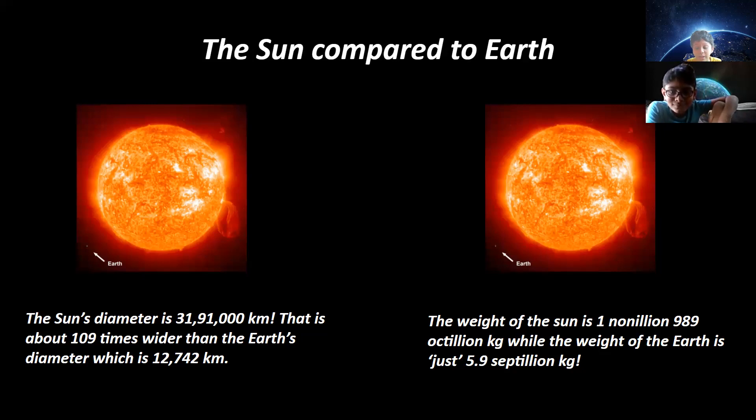The weight of the sun is 1 nonillion 989 octillion kilograms, while the weight of the Earth is just 5.97 septillion kilograms.